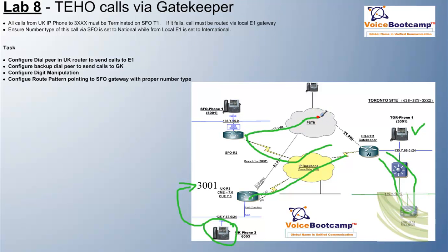The call will somehow come into Toronto. Our goal is to bring the call back to the Call Manager and then ring the phone. Some cases you may need to do a weird call routing to achieve certain functions — this is one of those cases. I will show you step by step how to achieve this.